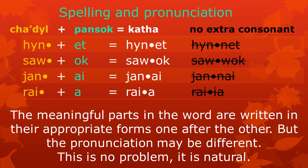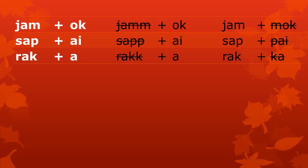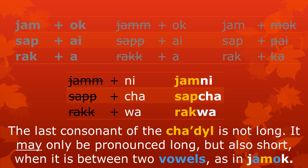The meaningful parts in the words are written in their appropriate forms one after the other, but the pronunciation may be different. This is natural. When combining meaningful parts to make words, meaningful parts are written in their appropriate forms. The spelling shows very clearly which meaningful parts the words have. The words jamok, sapok, and rakka have the meaningful parts jam, sap, and rak followed by ok and a. We can do a replacement test — replace the pansock ok or a by ni, cha, or wa. We get jam-ni, sap-cha, and rak-wa. The last consonant of the cha-dil is not long in the spelling; it may only be pronounced long when it is between two vowels, as in jamok.